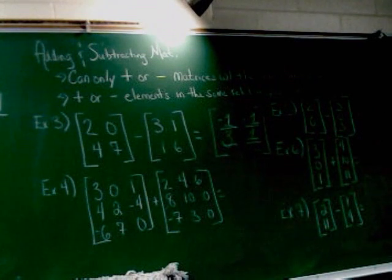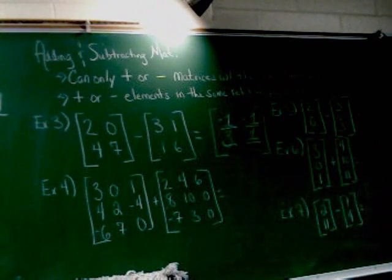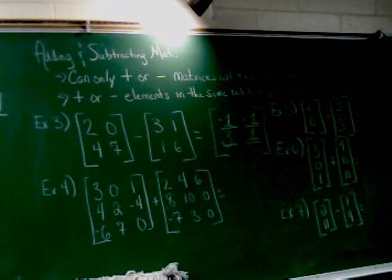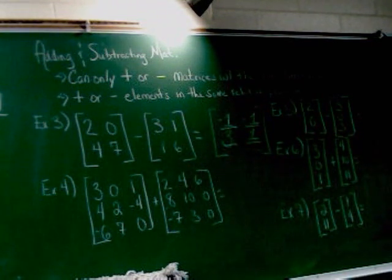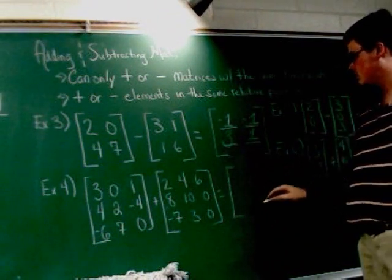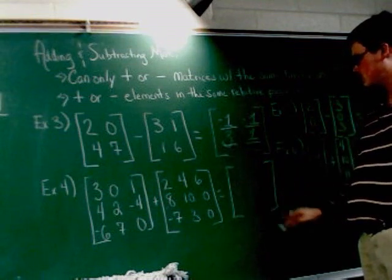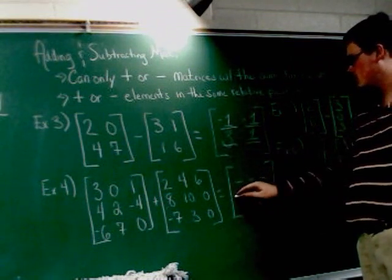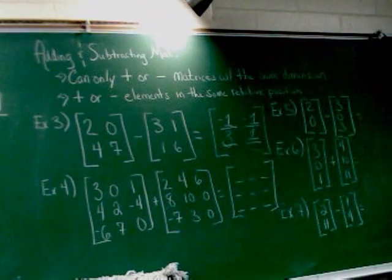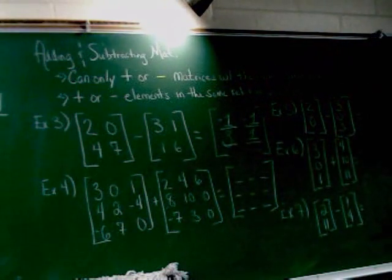Let's go to example 4. More of the same. Left matrix: 3, 0, 1, 4, 2, negative 4, negative 6, 7, 0. And then we've got 2, 4, 6, 8, 10, 0, negative 7, 3, 0. As you can clearly see, they're the same size. They're both 3 by 3 matrices.